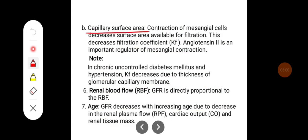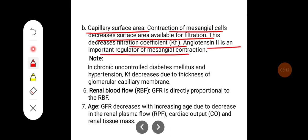Contraction of mesangial cells decreases the capillary surface area available for filtration, which decreases the filtration coefficient. Angiotensin 2 is an important regulator of mesangial contraction.